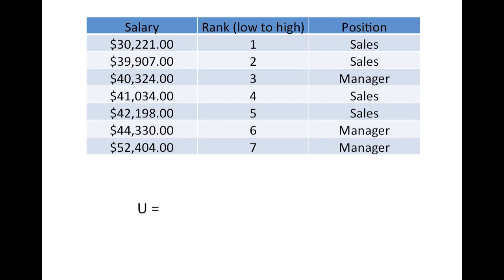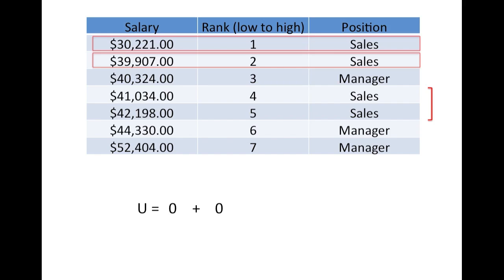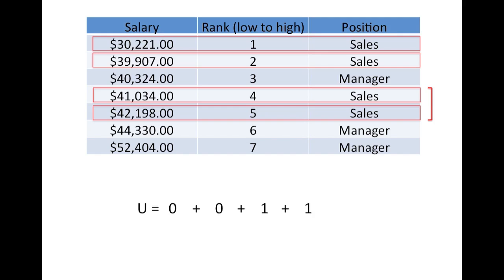So, for example, imagine we actually had a data set where two salespeople had higher incomes than one manager. We would calculate the U like this. First, the salesperson has zero managers ranked lower than them. Same with the second. This salesperson has one manager ranked lower, and this salesperson also has one manager ranked lower. So our U comes out to two.